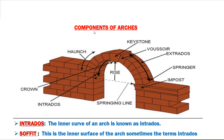Welcome back to my channel SSC239. In this video I am going to discuss definitions of components of arches. Before we see components of arches, first we know what is an arch. Arch is a curved structure which is constructed of wedge-shaped blocks of stone or brick, which is joined together with mortar, and the arch is provided across the opening to carry the weight of the structure above the opening.